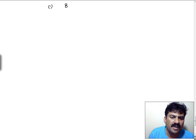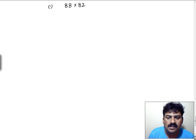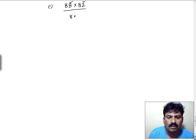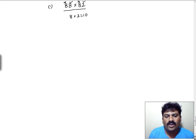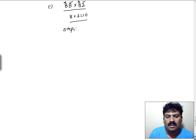One more example: 88 into 82. If you look at this multiplication, the units place digits are 2 and 8. Now 8 plus 2 equals 10, and the tens place digit is 8, so we can apply the technique. In step 1: 8 into 2 equals 16, which becomes the RHS part of our final answer.